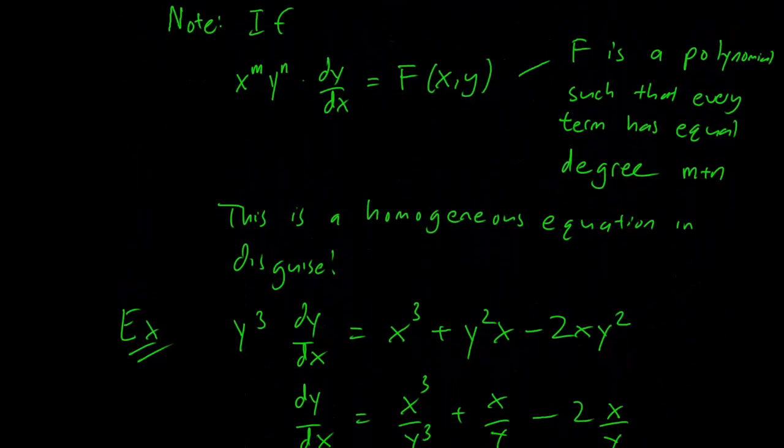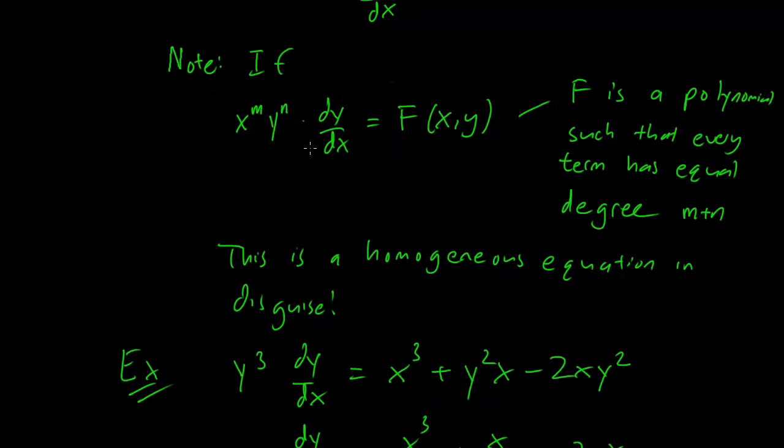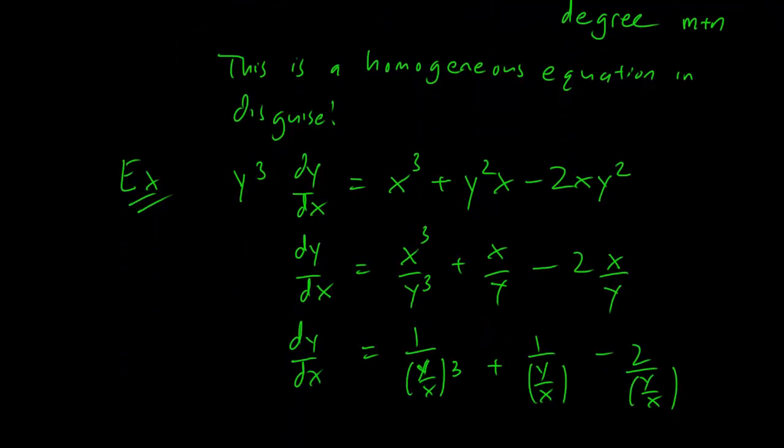So as long as you have an equation like this, and this is actually how most homogeneous equations are going to be posed, because every term is a polynomial term and degrees are all the same. You can divide out by whatever degree is multiplied by the dy/dx to get a homogeneous equation again.